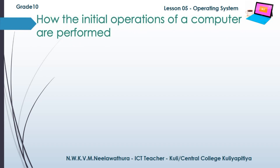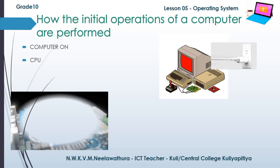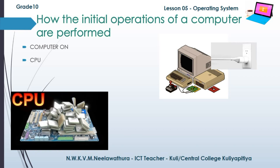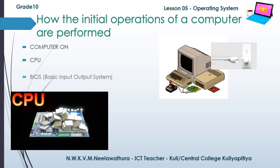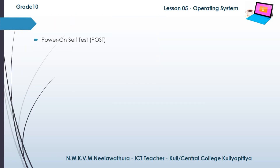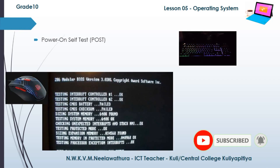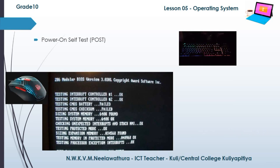Now we discuss how the initial operations of a computer are performed. When the user powers on the computer, the CPU — CPU means Central Processing Unit — activates the BIOS, which means Basic Input Output System. The BIOS program activates the POST — POST means Power On Self Test. During this process, you can see your computer's keyboard and mouse LED bulbs are blinking.